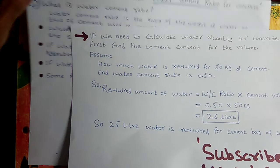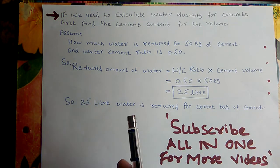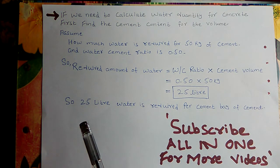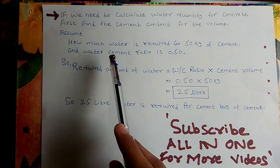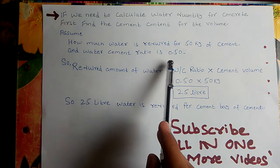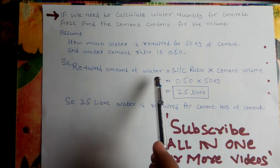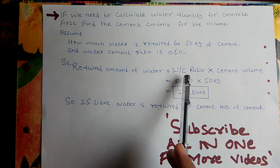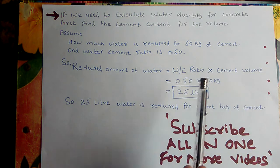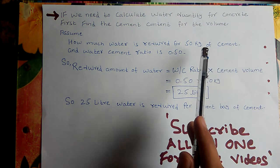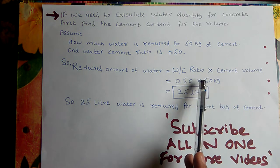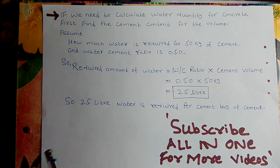Now we will find how to calculate water weight if we know the ratio and weight of cement. Given: 50 kg of cement and water cement ratio is 0.50. Using the formula: water = water cement ratio × cement weight, so 0.50 × 50 kg = 25 liters of water required per bag of cement.